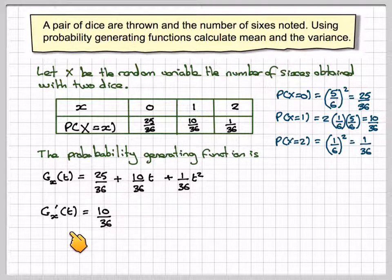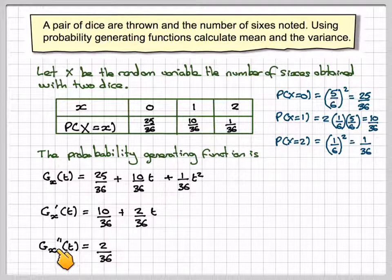We need to find G'(t), which is going to be 10 over 36, because this one will be 0, plus 2 over 36 times t. And we will also need G''(t), which is going to be 2 over 36 when you differentiate this.